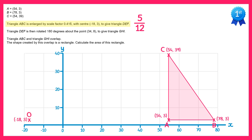Let's work through each of the points A, B and C in turn and work out where they would go under this transformation. The horizontal distance from O to A is 72, since to get from negative 18 to 54 you need to add 72. We do 5 twelfths of this: one twelfth of 72 is 6, times 5 is 30. So this point will be 30 horizontally from O. O is at negative 18, so adding 30 gives us the point (12,3).